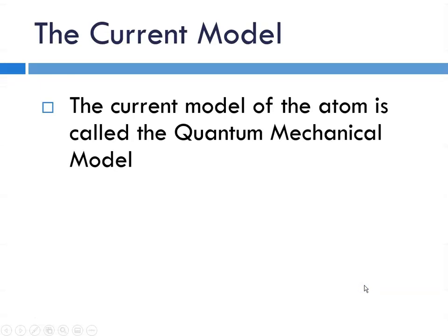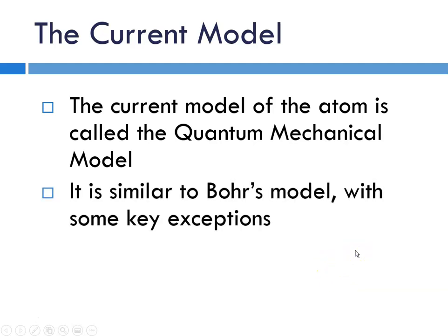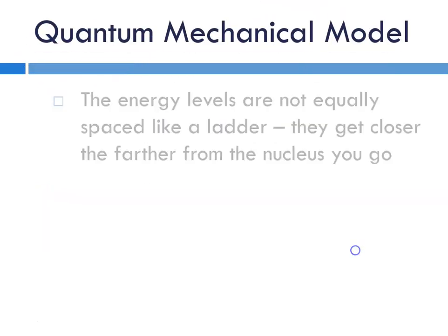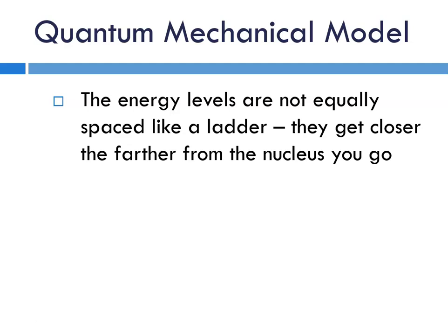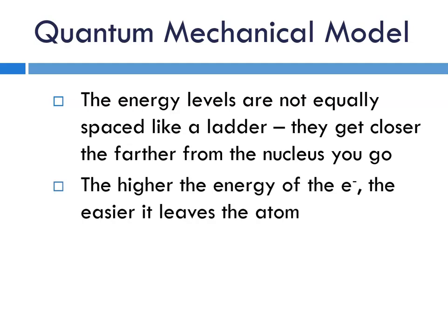So the current model of the atom is called the quantum mechanical model. And it is similar to Bohr's model, with some key exceptions. Specifically, the energy levels are not equally spaced like the rungs of a ladder. The higher they get, the closer, the farther from the nucleus you go. And the higher the energy of the electron, the easier it is to leave an atom.